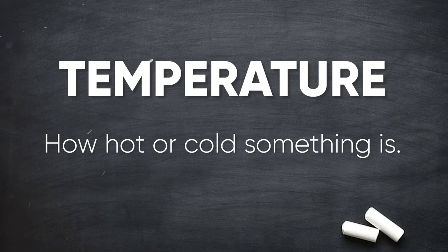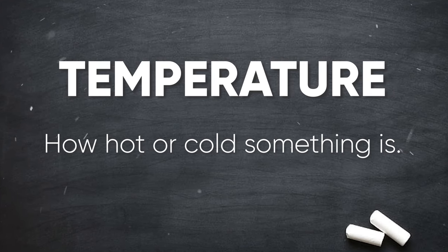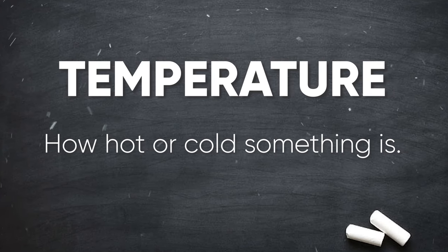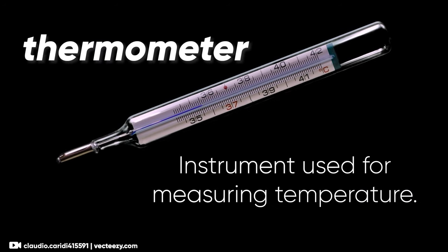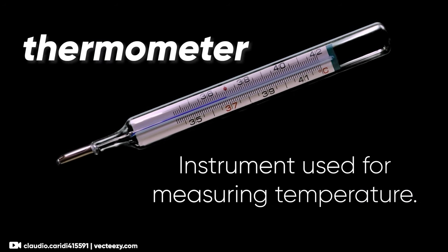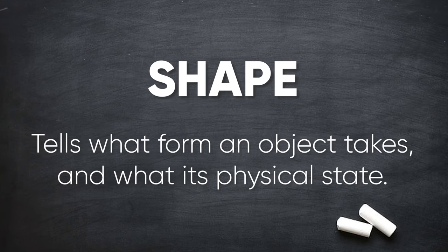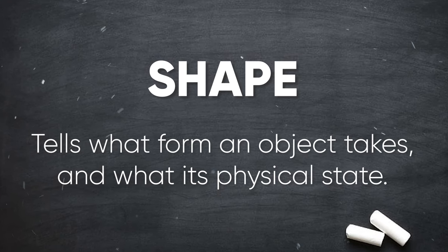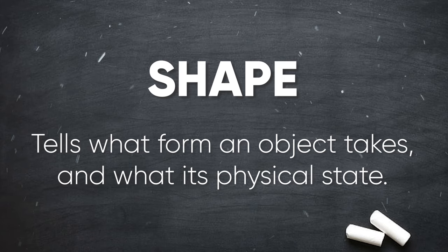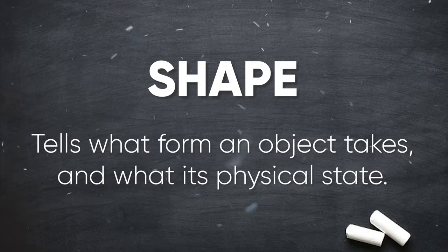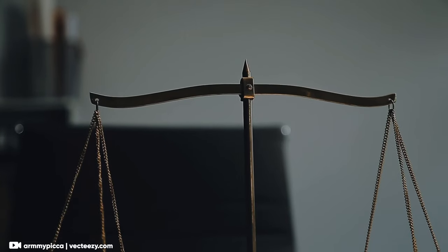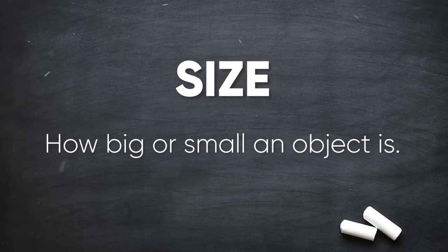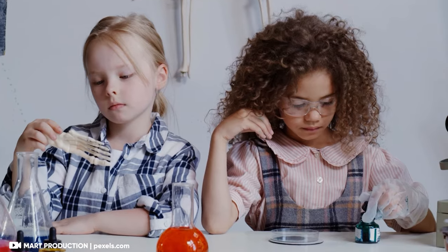Temperature is another property that describes how hot or cold something is. We can easily measure temperature using a thermometer. You've probably used a thermometer when you were sick. Shape and size are also important physical properties. Shape tells us what form an object takes, whether it's round, square, or any other form. This also includes the physical state of the object, like being bent, curved, or straight. While size tells us how big or small it is, these are things we can observe just by looking.